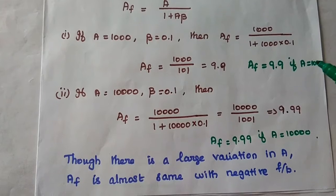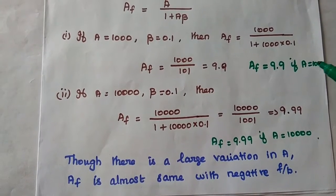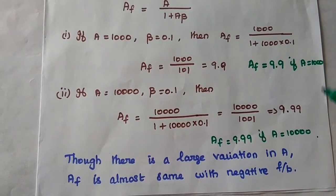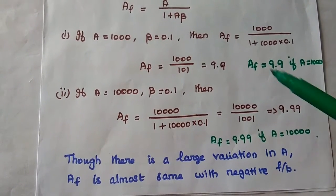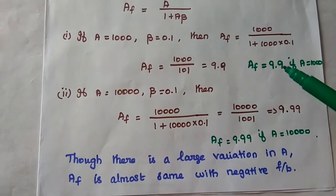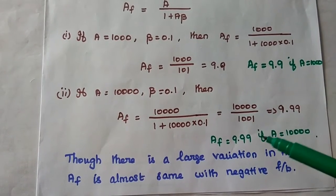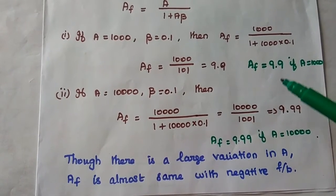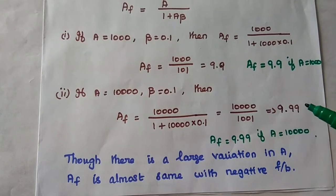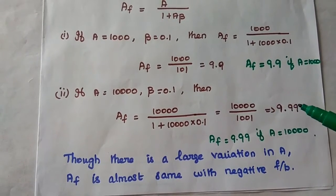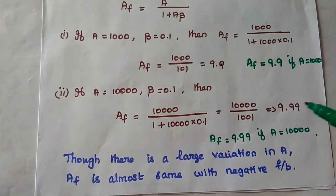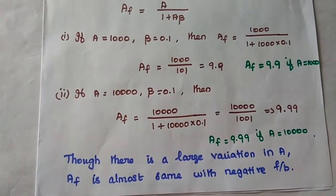So even though there is a large variation in the gain without feedback (from 1000 to 10,000), the gain with feedback is almost the same. Therefore, negative feedback stabilizes the gain of the amplifier, and the statement is justified.